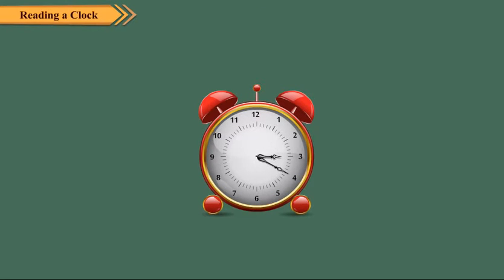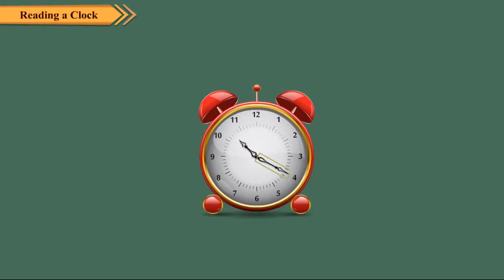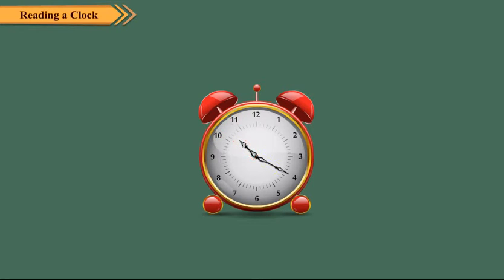Now, think of the dial of a clock as two halves. When the minute hand is in the 1st half hour, we use the word 'past.' And when the minute hand is in the 2nd half hour, we use the word 'to.' In this clock, the minute hand is at 4. It means 5 into 4, which is equal to 20 minutes have passed. The hour hand is between 10 and 11, and the minute hand is in the 1st half hour. So, we write the time as 20 minutes past 10 or 10.20.